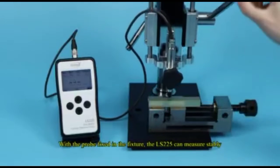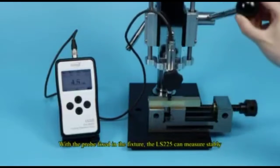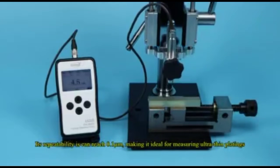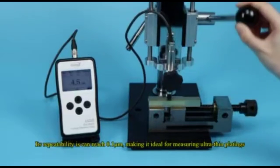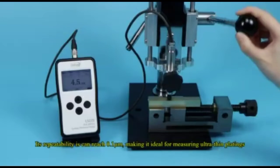With the probe fixed in the fixture, the LS225 can measure stably. Its repeatability can reach 0.1 micrometers, making it ideal for measuring ultra-thin platings.